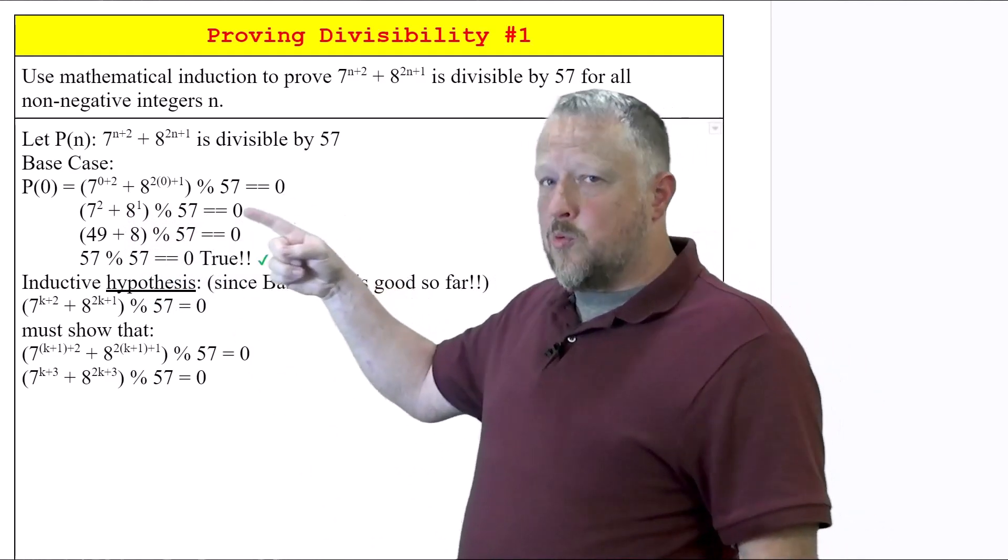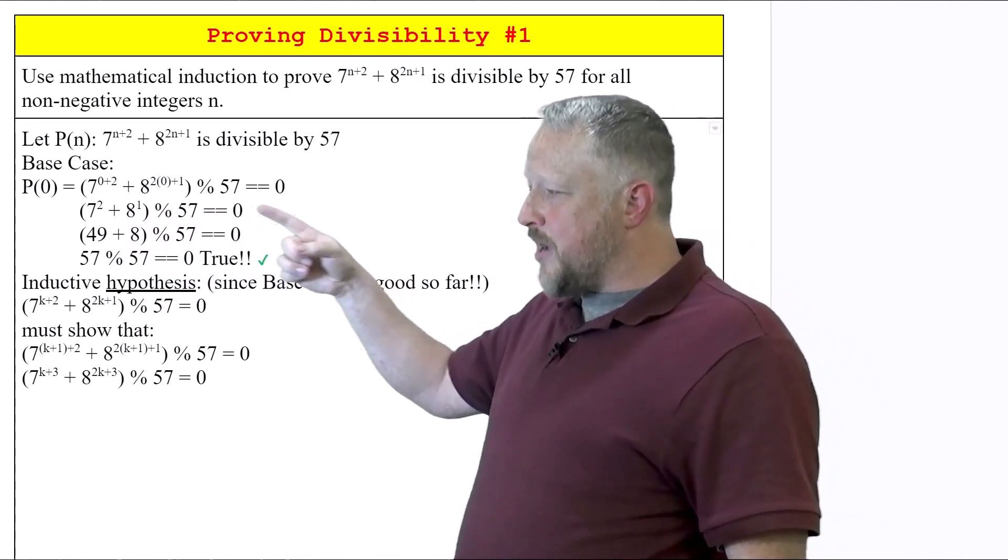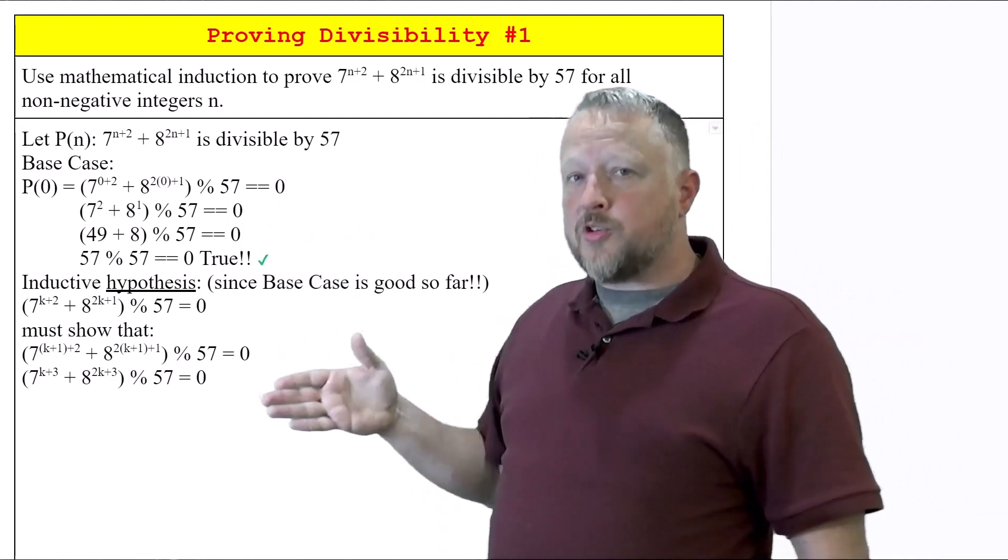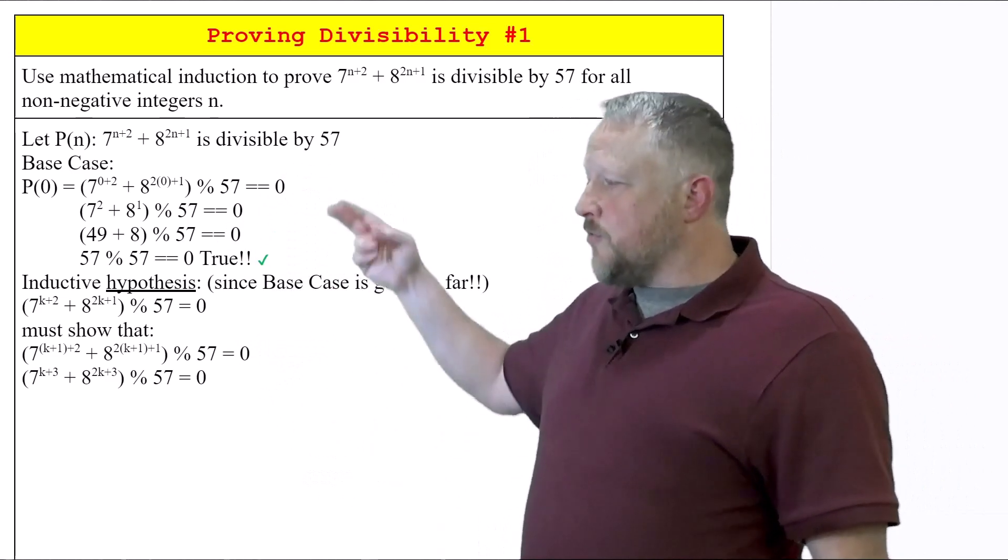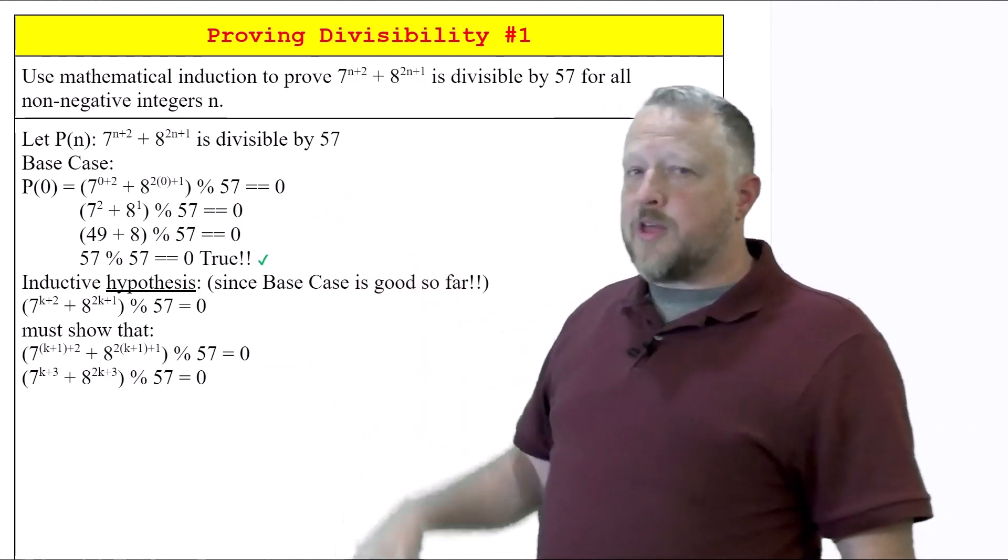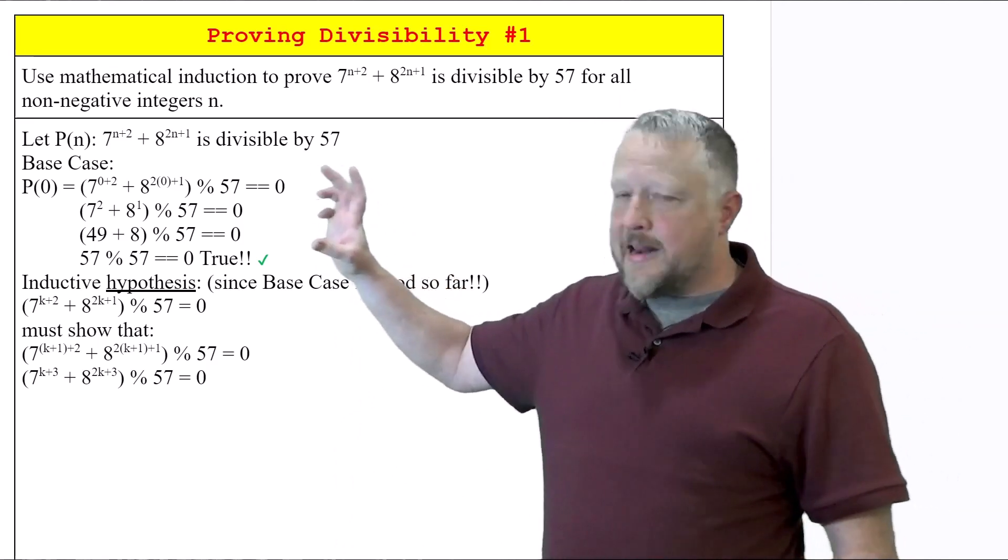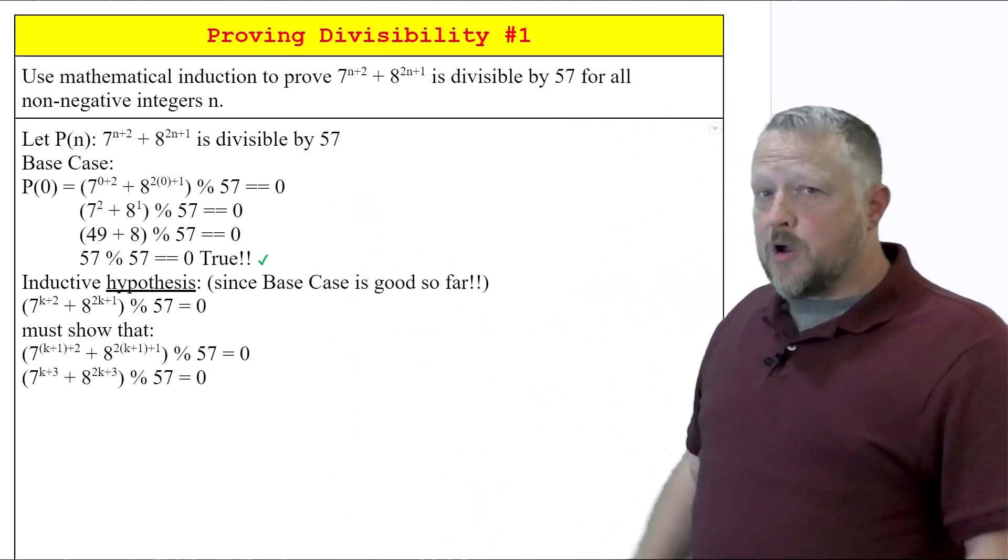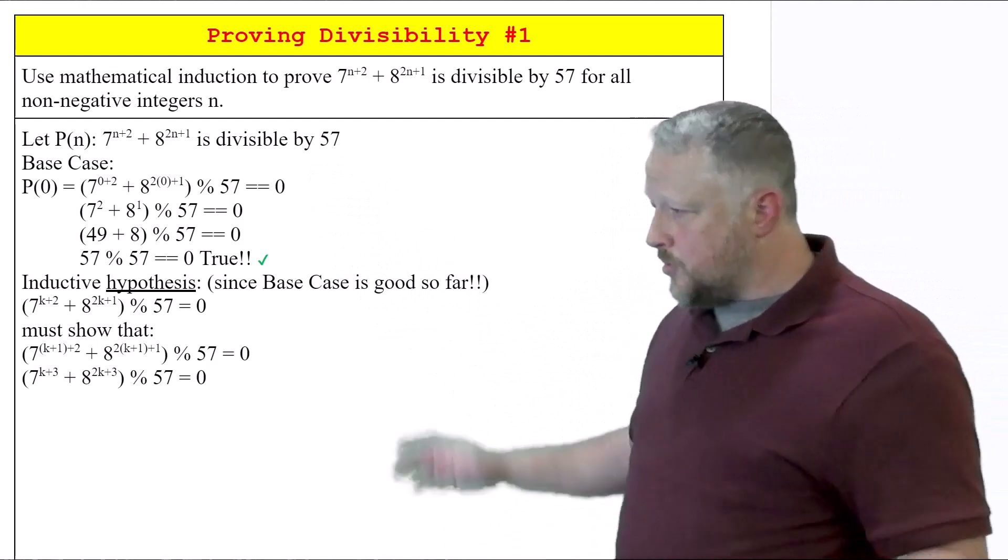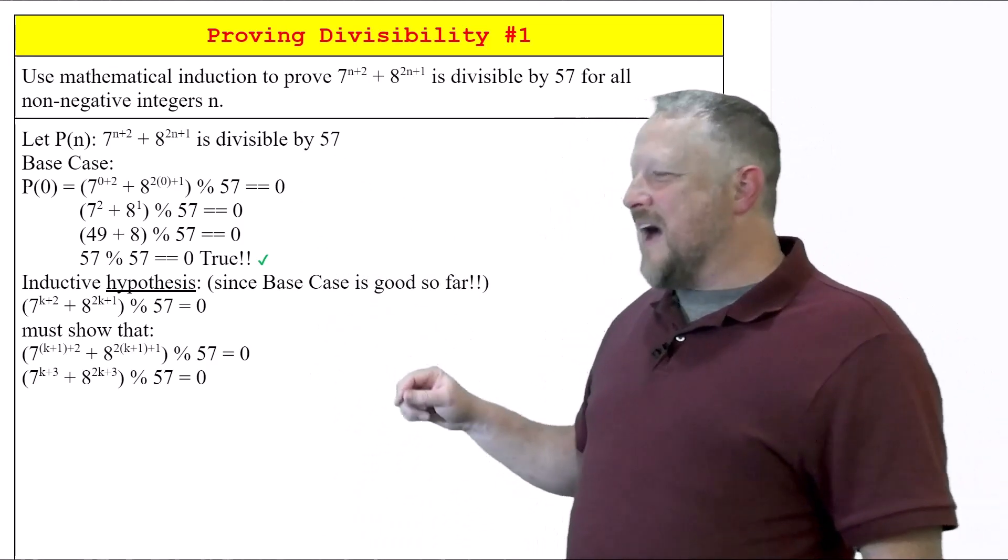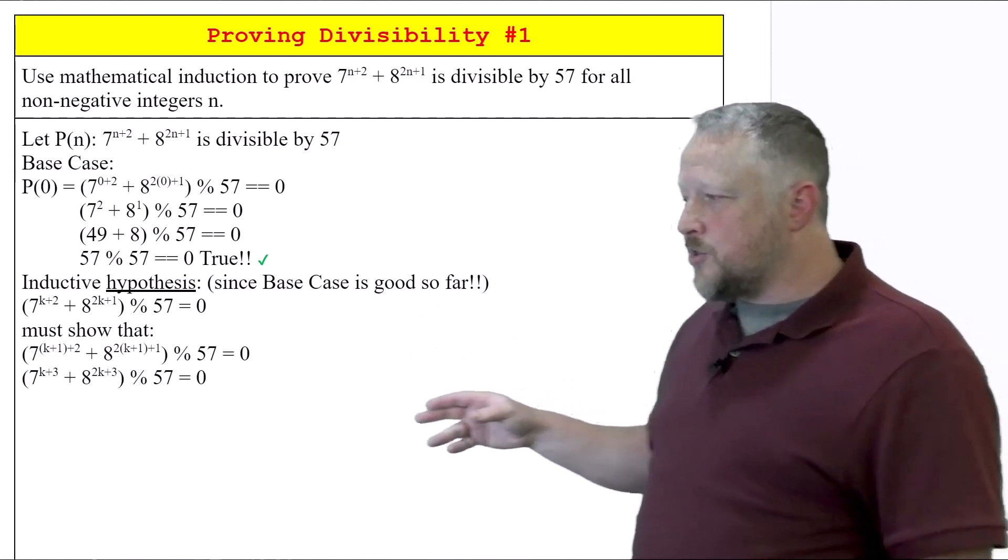Notice I am the one that put in the modulus 57 equals zero, because as you know, modulus means first that we divide it, and then we check the remainder. And if it's divisible, that means our remainder is going to equal zero. So I am the one that added that. You're not going to see that in the book and probably a lot of examples that are out there too. So just a heads up.